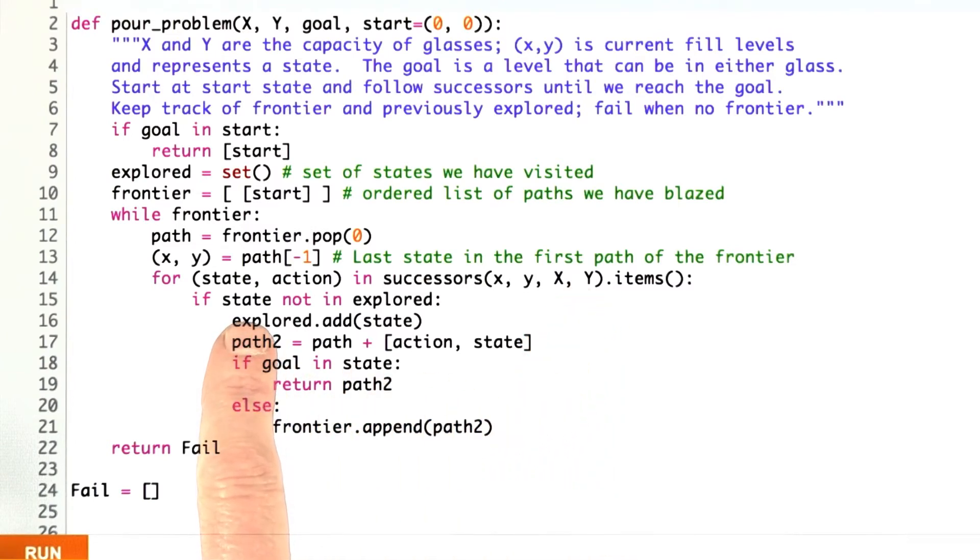Then if we say if that new state is not explored, then it's something new. If it was explored, there's nothing left to do. We've already explored from there. If it hasn't been explored yet, then add it to the explored set. Make up a new path, which consists of the old path, plus we follow an action to get to the new state. If the goal number is somewhere in that state, so the goal is 6 and the state is the two levels of the glasses, say 6 and 3, yes, 6 is in 6 and 3, then we're done. We return that path as the winner, the path that reached the goal.